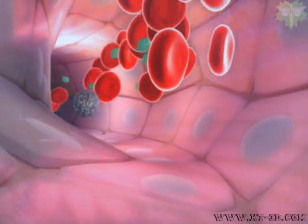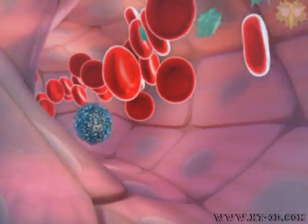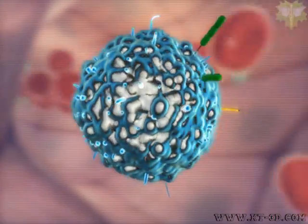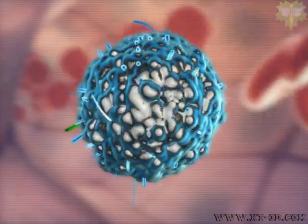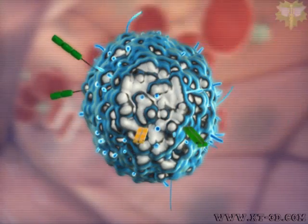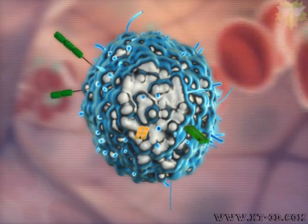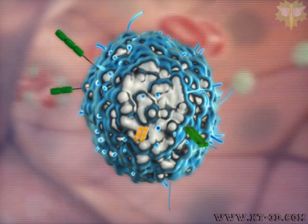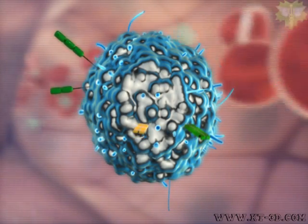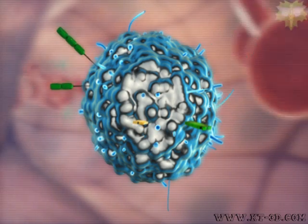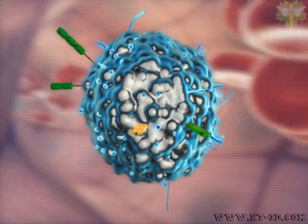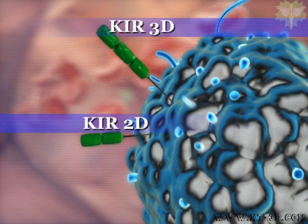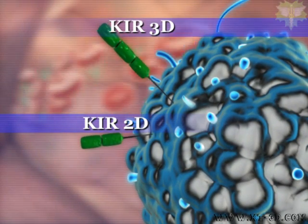The receptors on the natural killer cell surface that regulate the recognition phase consist of two types. One is composed of receptors that are homologous to the C-type lectins and is called the natural killer receptor complex. The other is composed of immunoglobulin-like domains called killer cell immunoglobulin-like receptors, also known as KIRs, shown on the natural killer cell surface as the forms KIR3D and KIR2D.